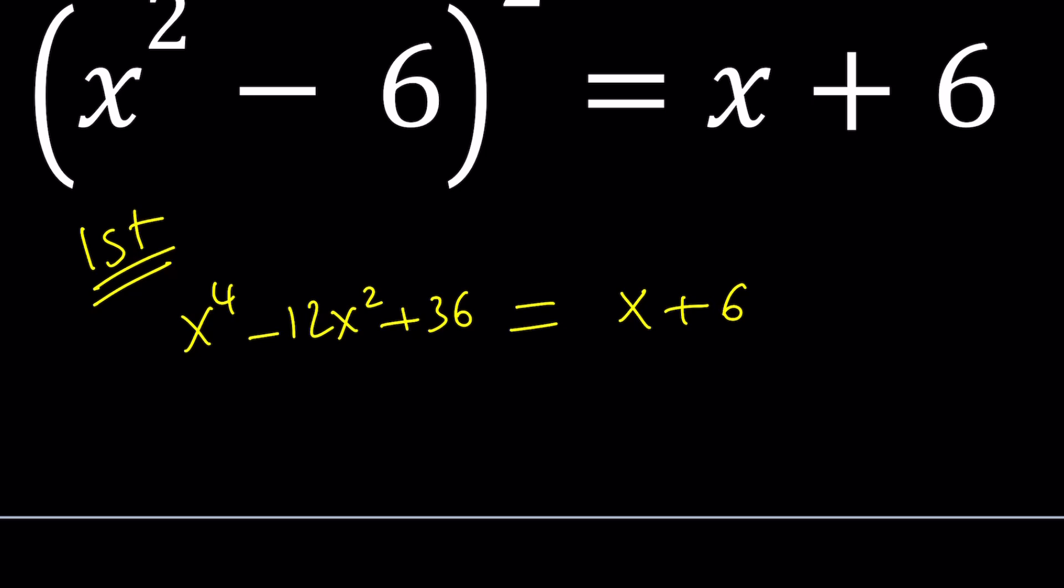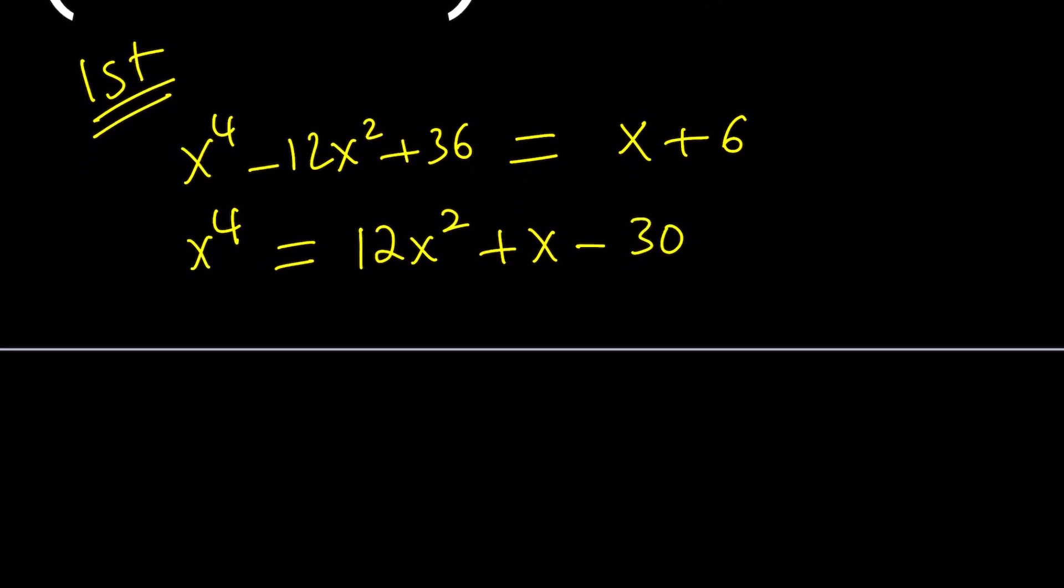So let's go ahead and put everything besides x to the fourth on the right-hand side. So I'm going to go ahead and isolate x to the fourth and write this as 12x squared plus x minus 30. Great. So far so good, right? The fourth power equals a quadratic. What is that supposed to mean? Not much. But we're going to turn this into something meaningful.